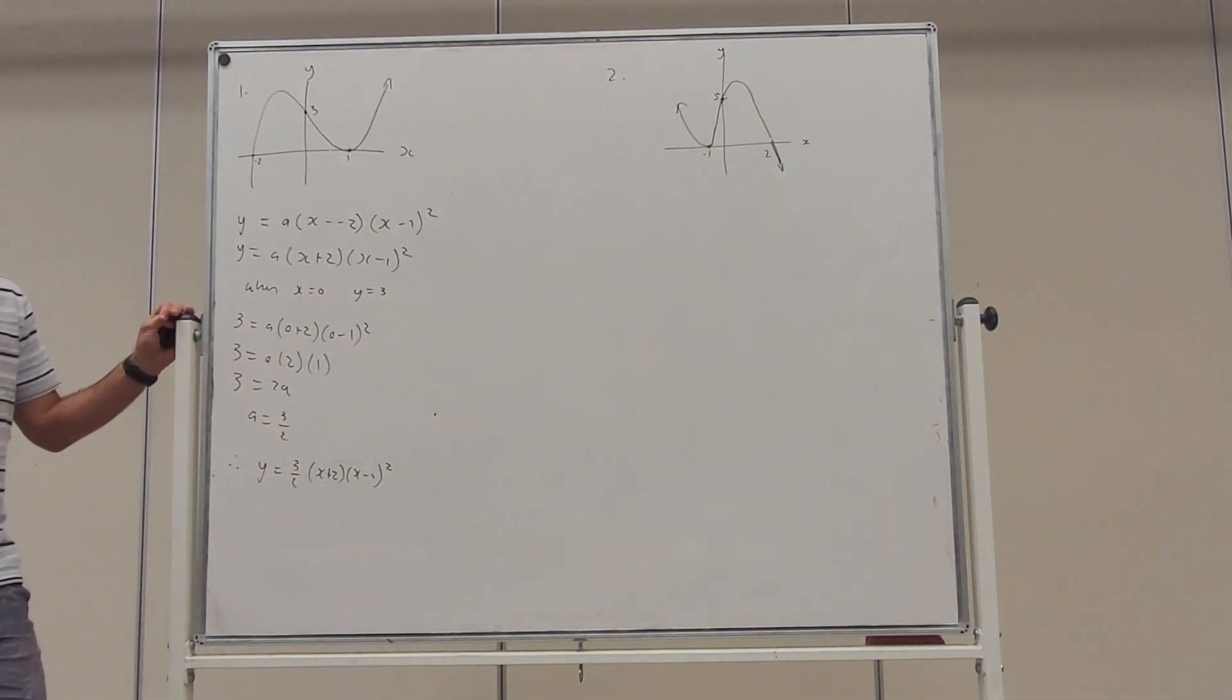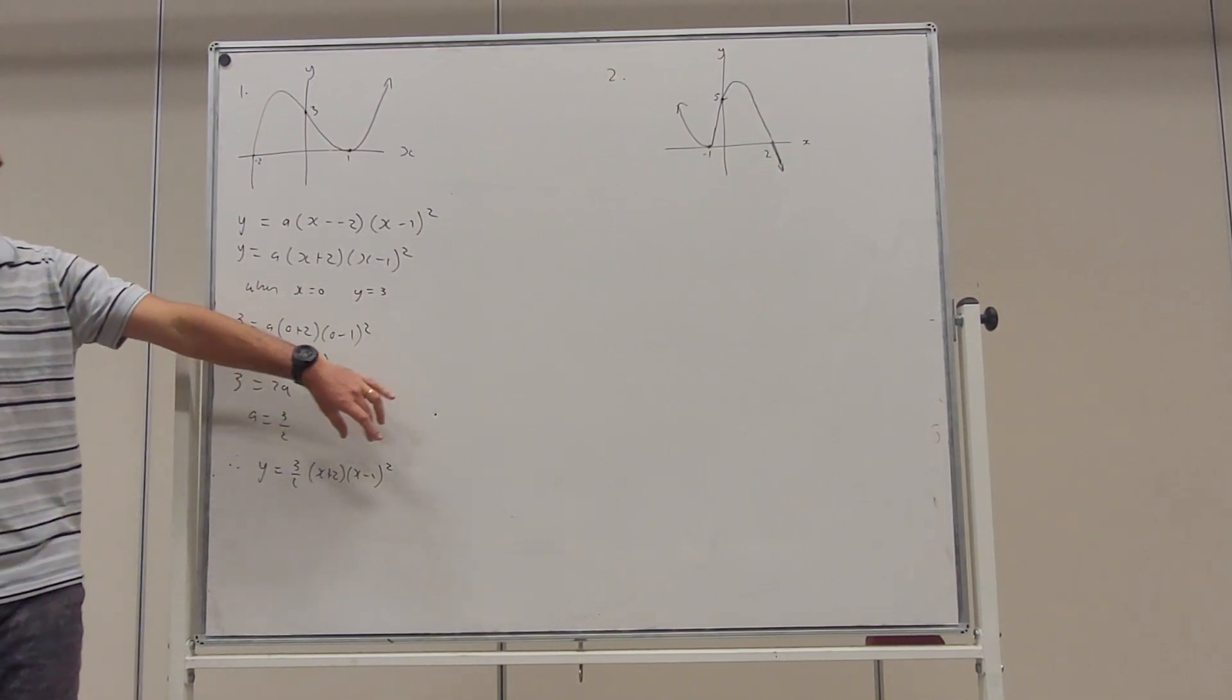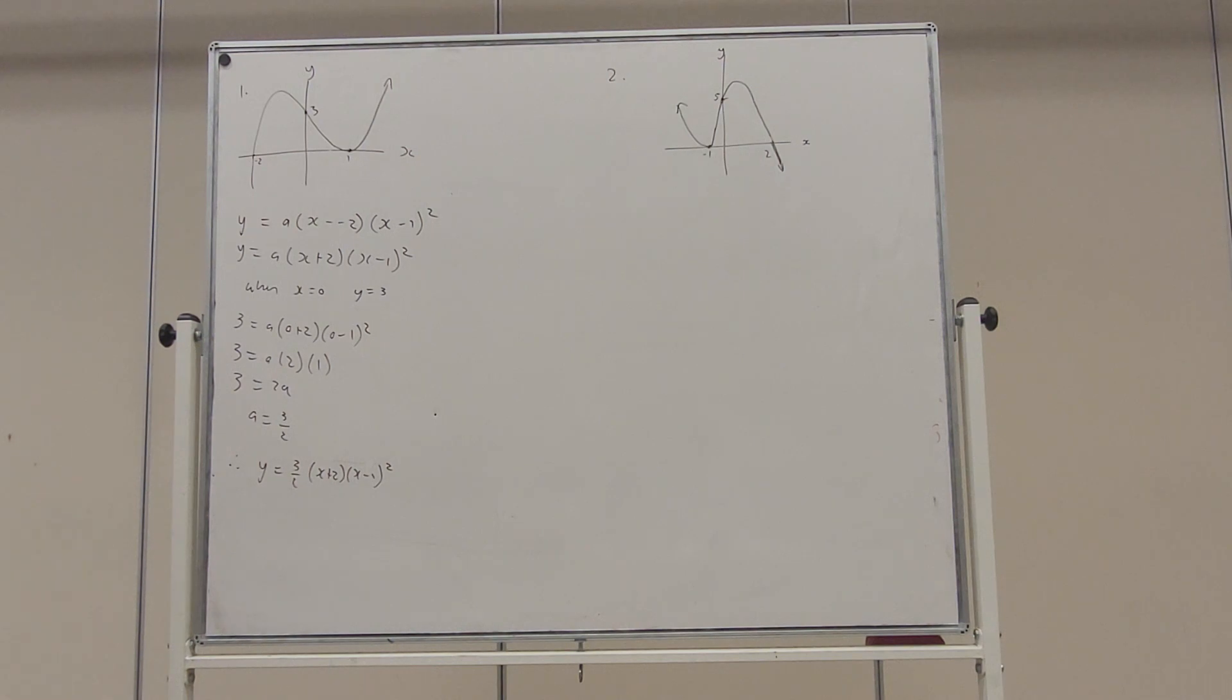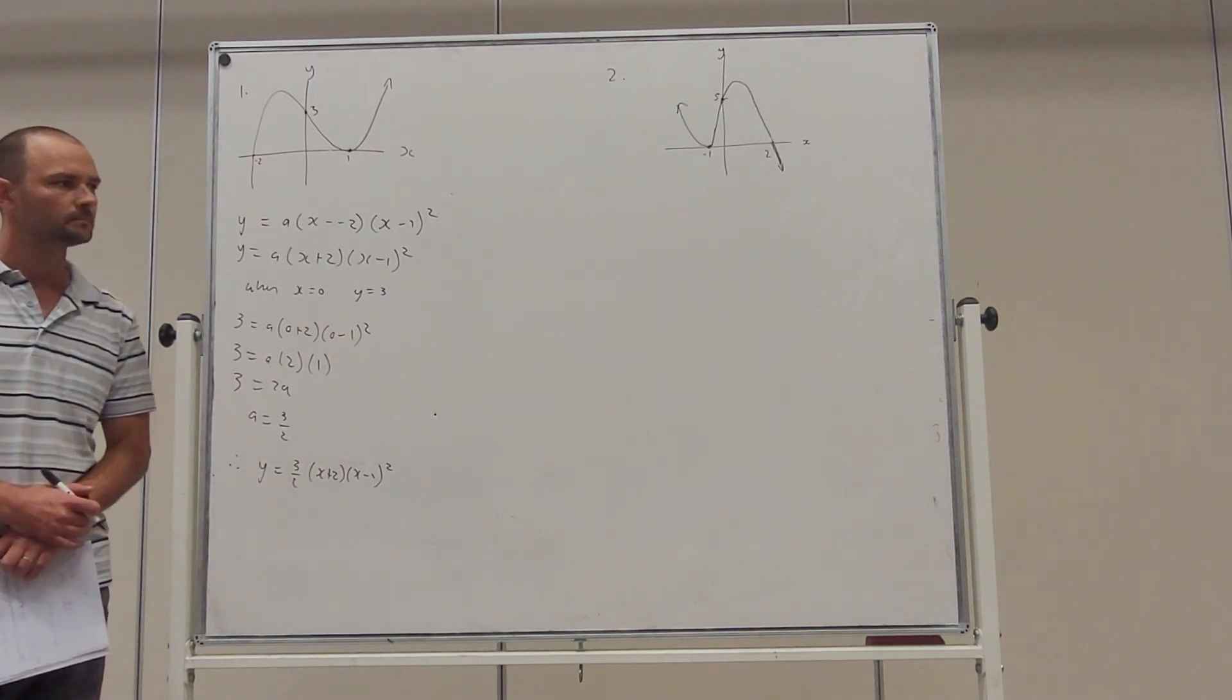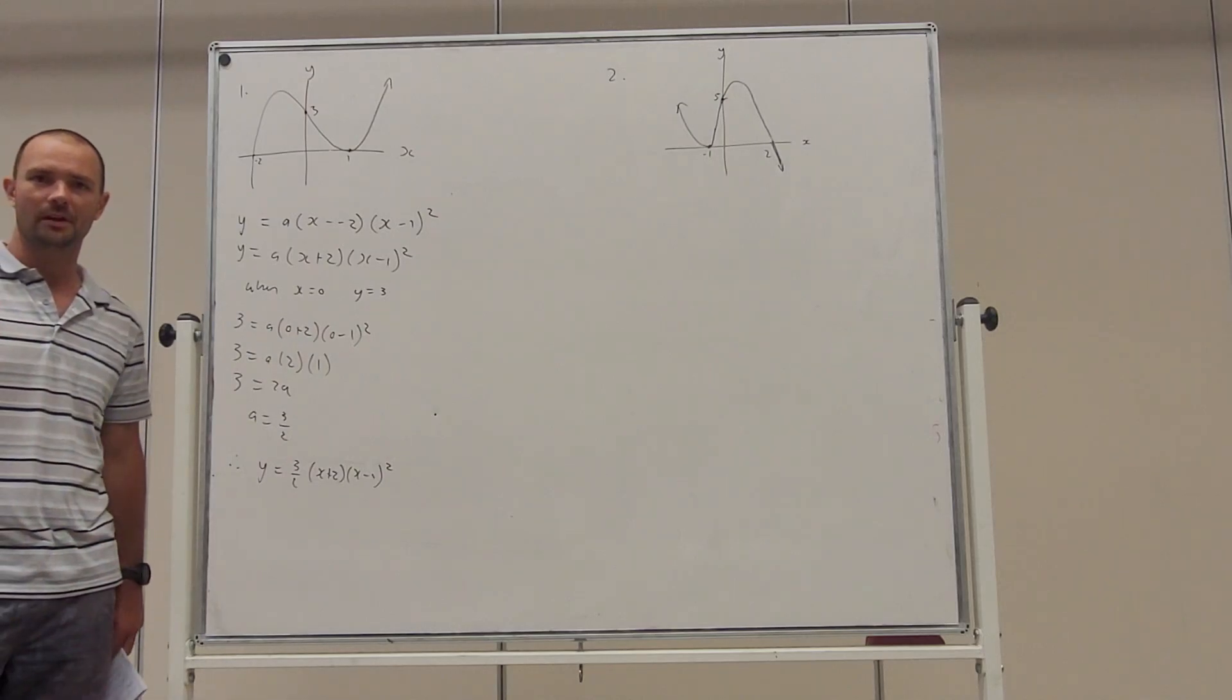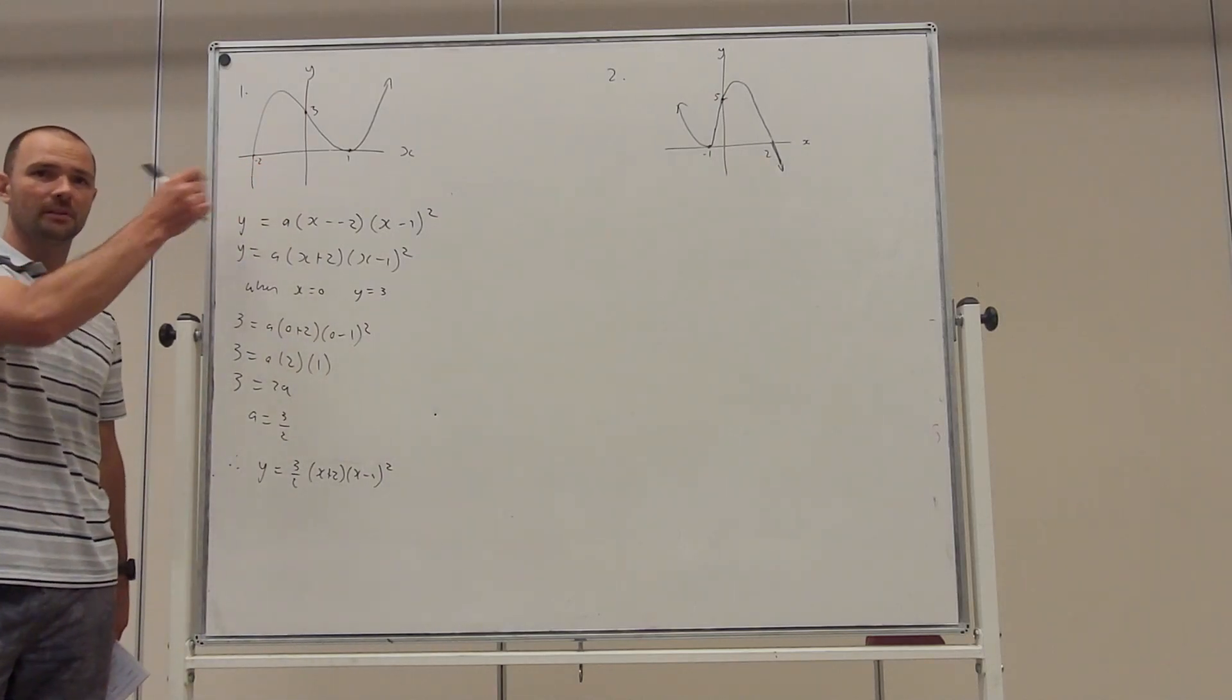Then solve for a and rewrite the polynomial cubic, because we have a linear times a quadratic. You boys are happy with that? You're going to be doing this a little bit? Really good.